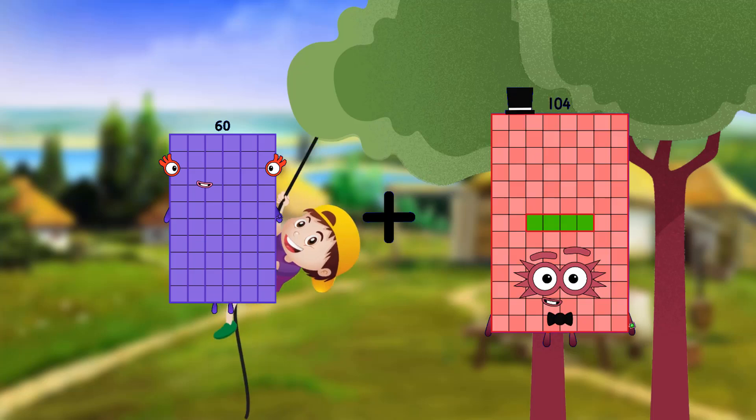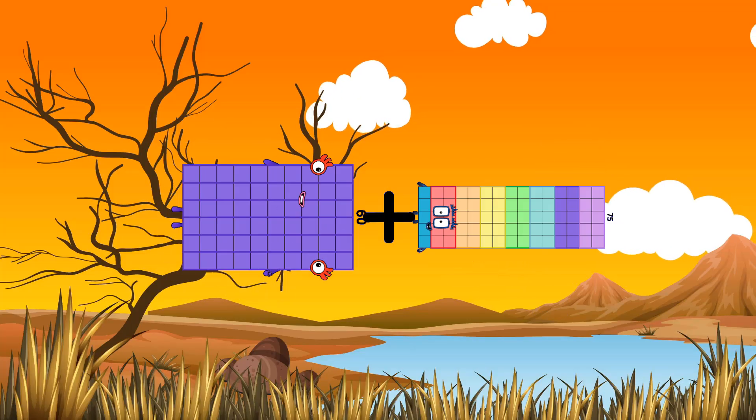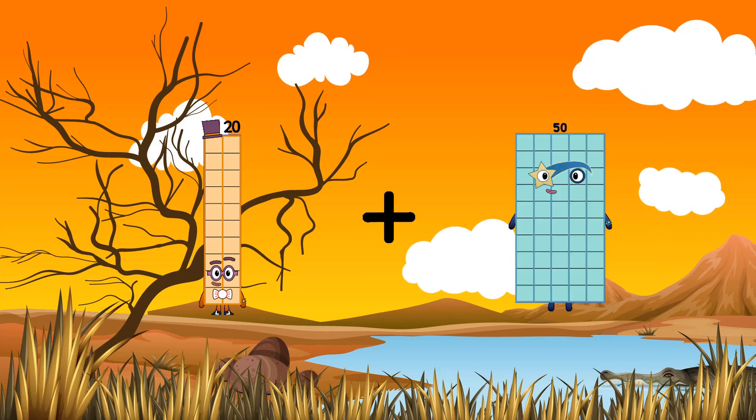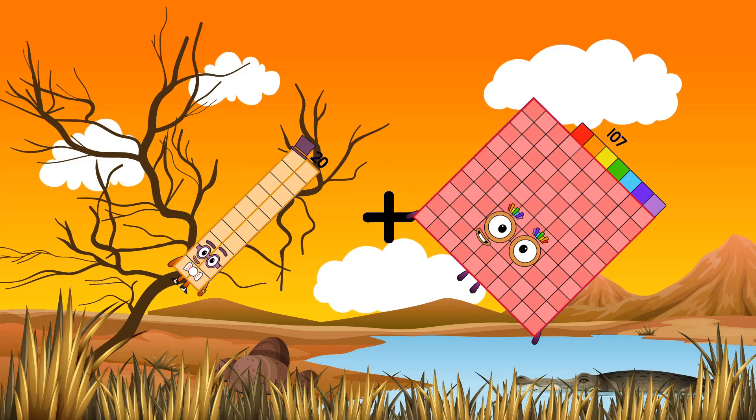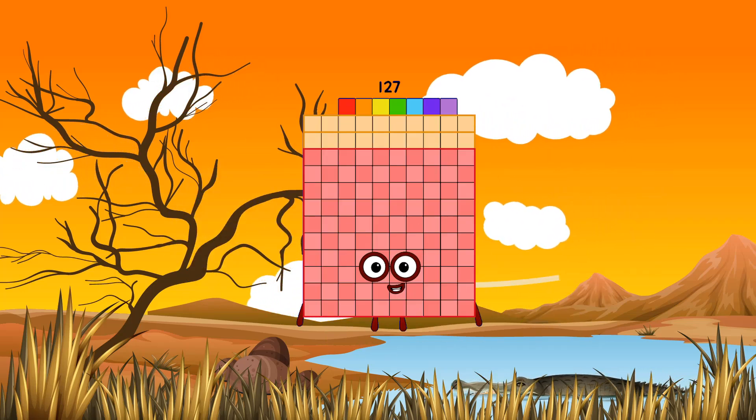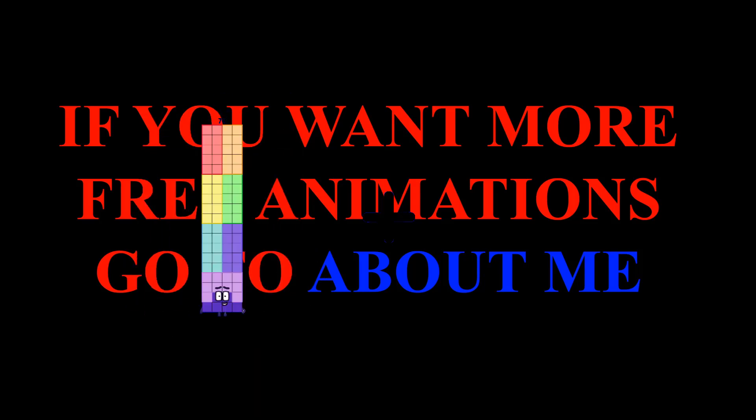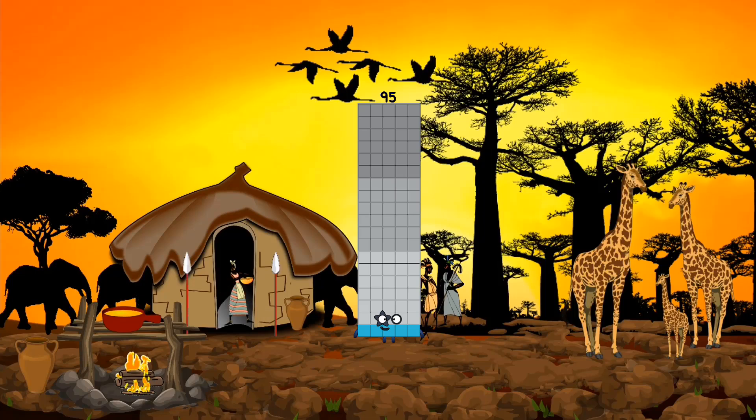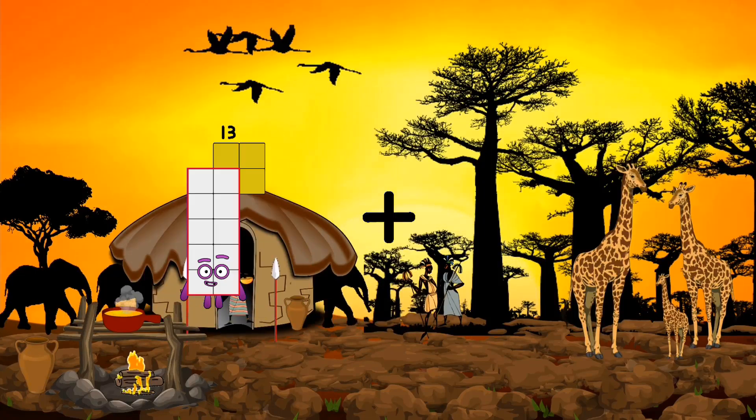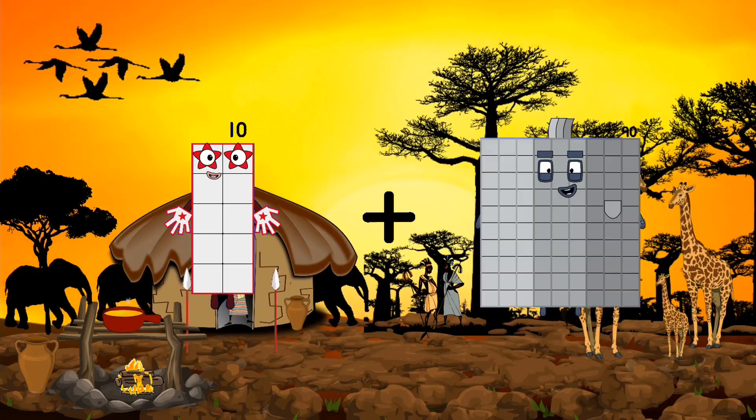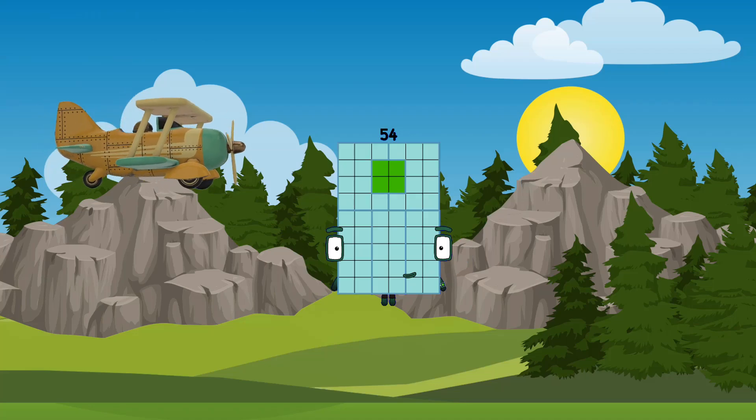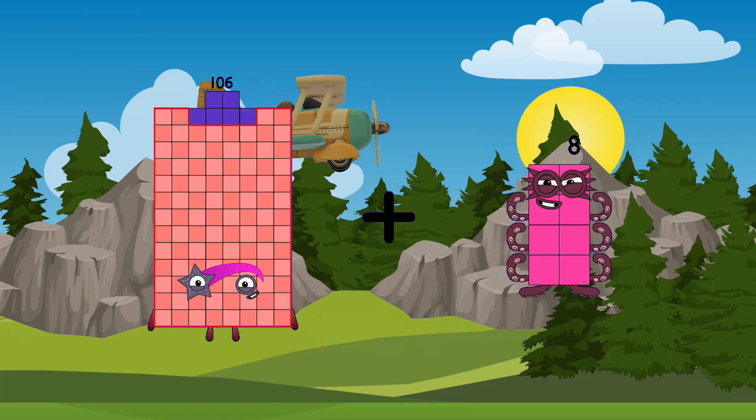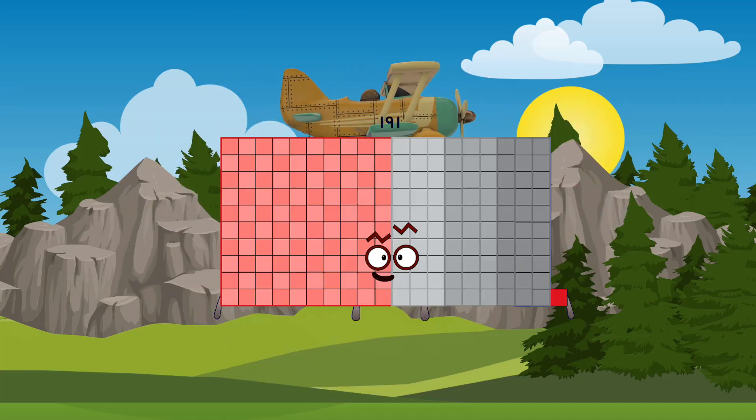60 loss, 75 equals 135. 20 loss, 107 equals 127. 76 loss, 19 equals 95. 10 loss, 44, 54, 54. 106 loss, 85 equals 191.